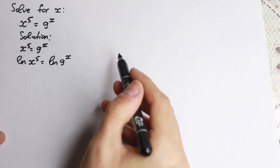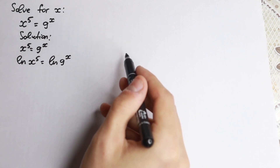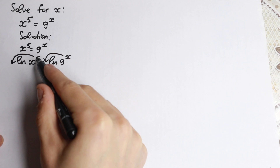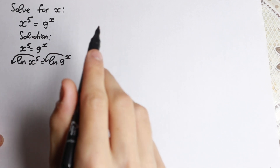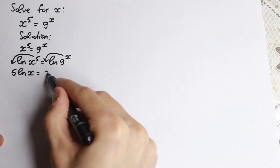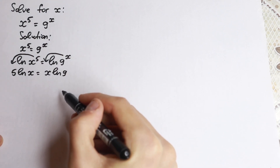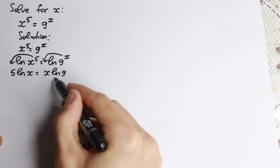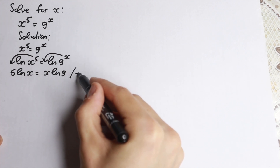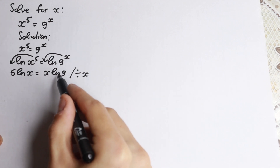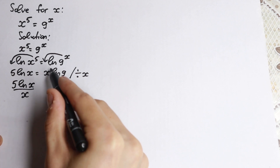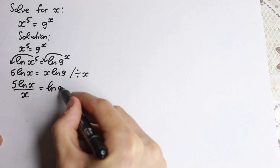Now we need to use a really useful log property — maybe the best property in all of math — because we can bring the exponents down in front: 5 natural log x equals x natural log 9. We have expressions with x on both sides and a constant on the right. So we can divide both sides by x, which cancels the x on the right, giving us 5 ln(x) over x equals natural log 9.